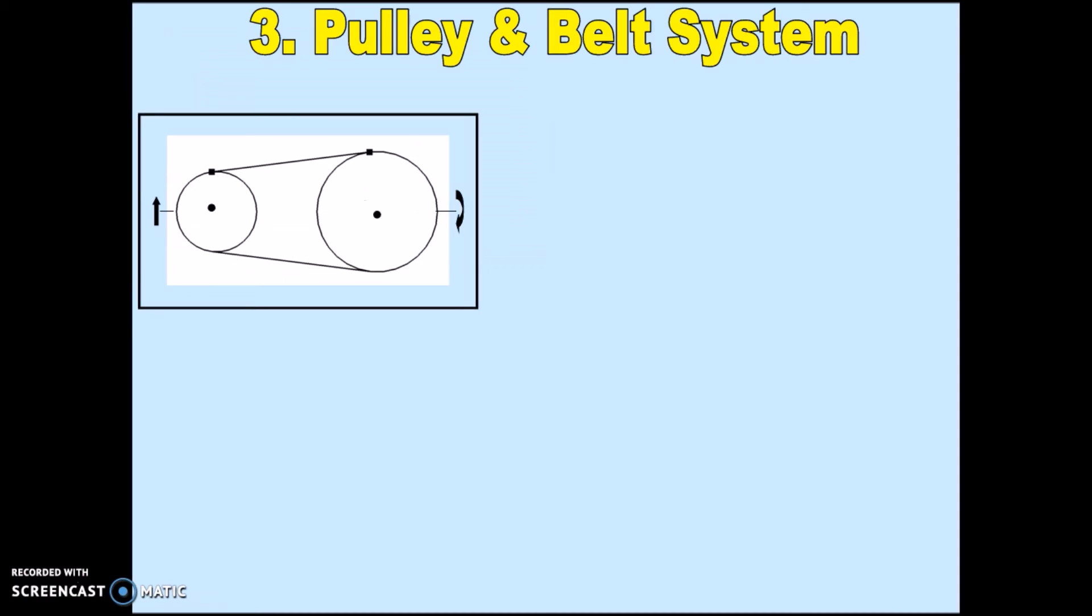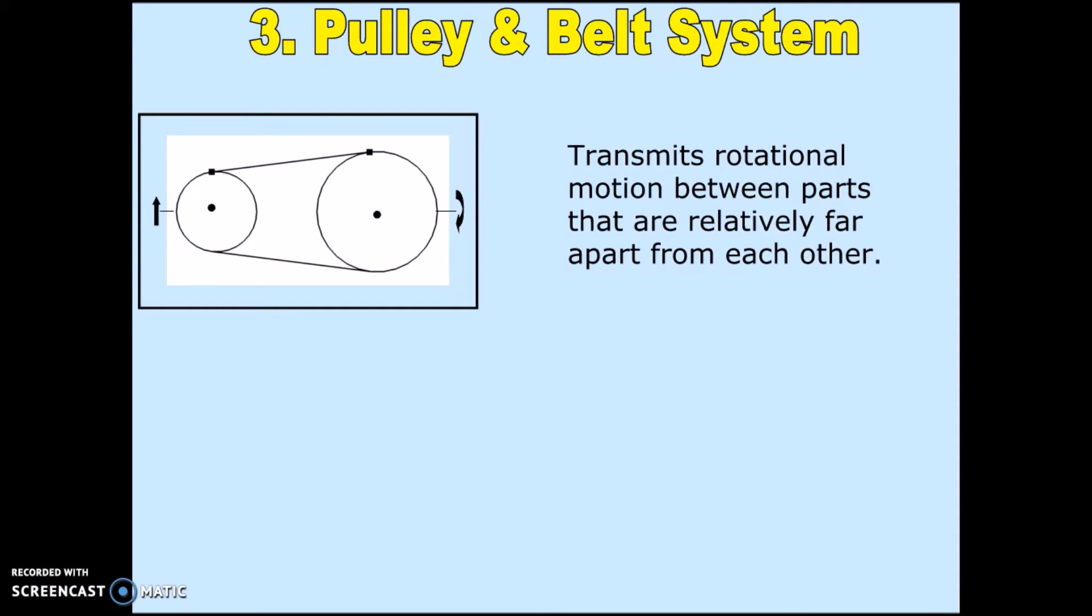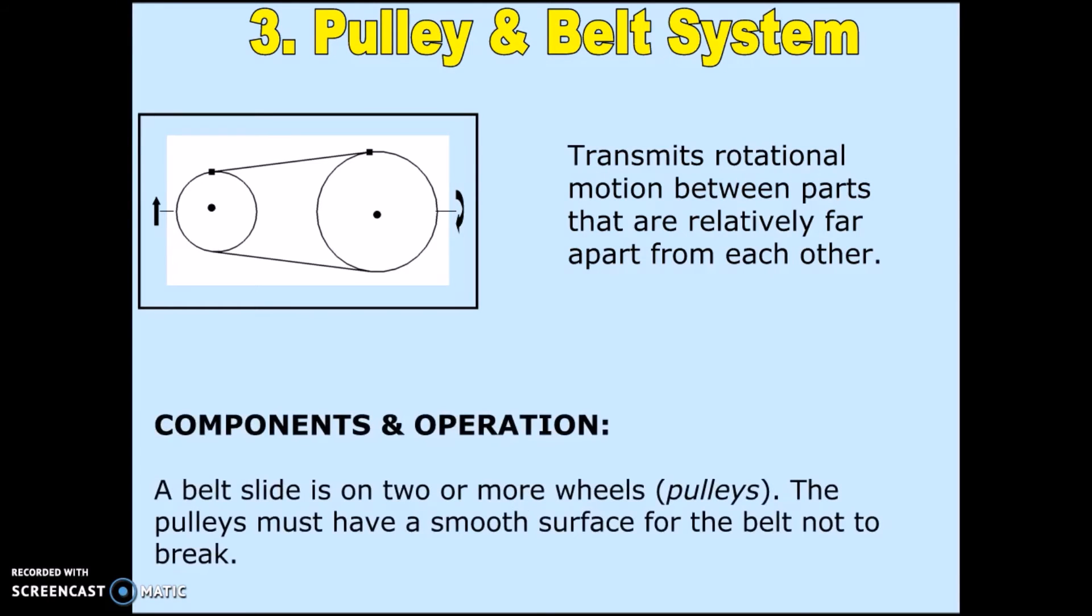Let's look at pulley and belt systems. Pulley and belt literally tells you what the components in this system are. These two wheels, instead of being called wheels like they are in friction gear, they're called pulleys. And this system actually does have an intermediate. This belt connects the two components.